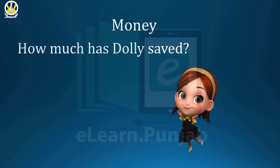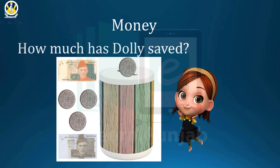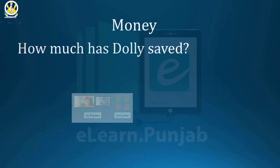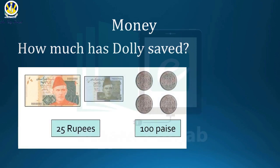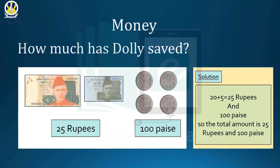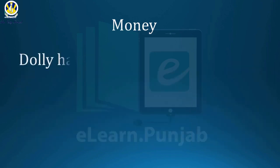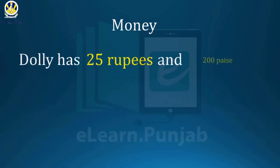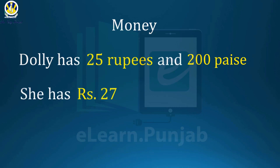How much has Dolly saved? See the money in the picture and calculate the value. Write down the amount in your notebooks. Twenty-five rupees and one hundred paise. Also check the solution: Dolly has twenty-five rupees and two hundred paise. If we calculate the total amount, the answer is rupees twenty-seven.